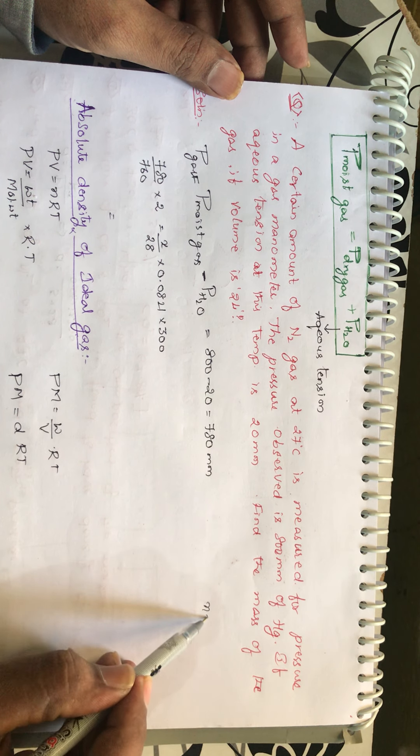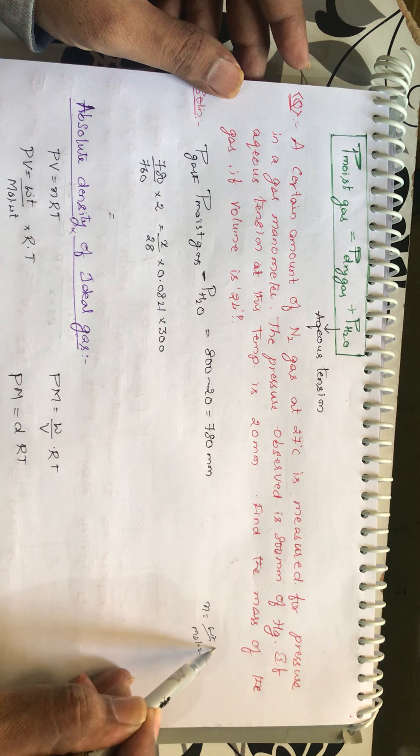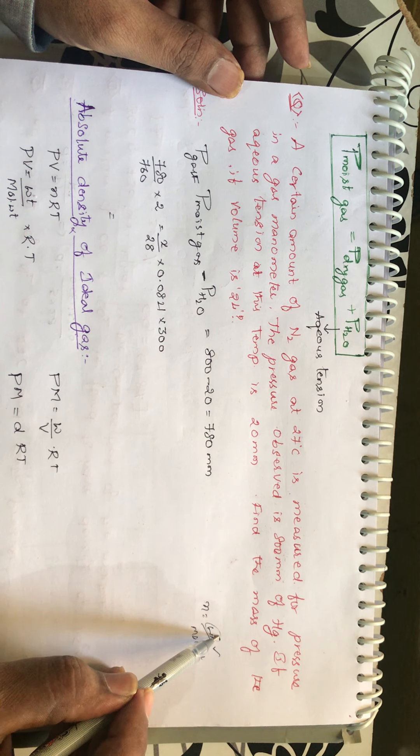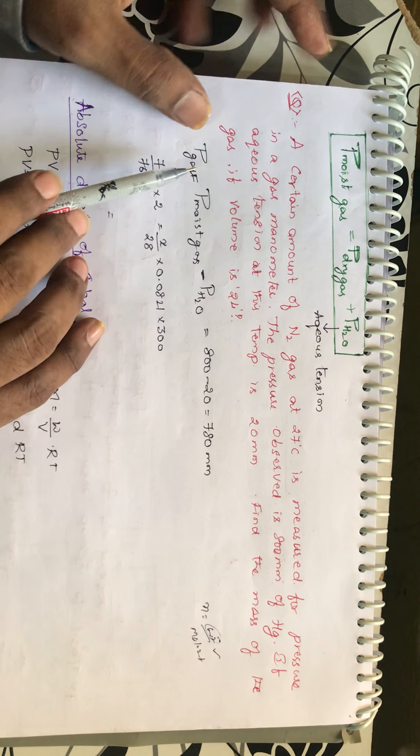So you should calculate the N. In N, you will be having weight by molecular weight. So he is asking weight. How much gas is present? If the volume is 2 liters, as he has mentioned. Suppose, first calculate the pressure.